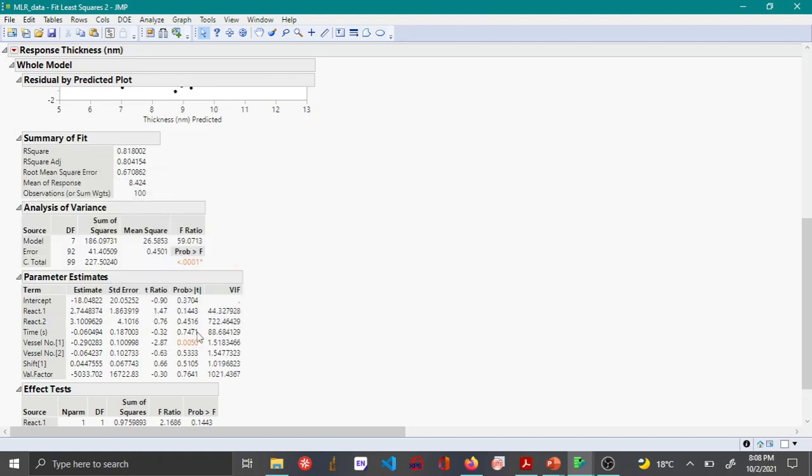And then say VIF. So now you can see that for react 1 the VIF is 44 which is high. If you set a cutoff of 10, then you can see that for react 1 it's 44, react 2 it's 722, for time it's 88, and the other three are one which is good. And the val factor has a VIF of 1021 which is very high.